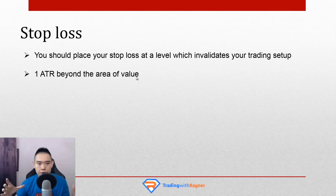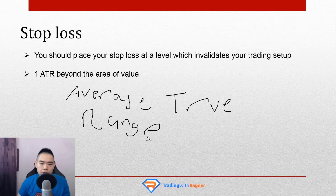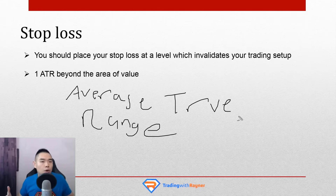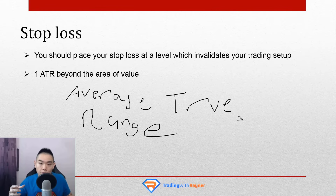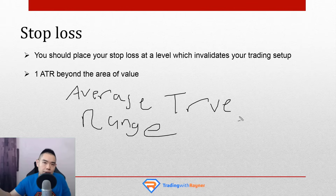ATR stands for Average True Range. It is a volatility-based indicator. When volatility is high, the value of this indicator will be high. When volatility is low, the value will be low. Volatility measures how much the price moves over a given period. If it moves a lot — a huge percentage — volatility is high. If it moves very little, like 0.1% or 0.05% per day, volatility is low.